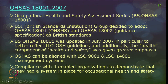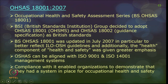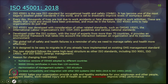Next is OHSAS 18001, with 2007 being the latest series. OHSAS stands for Occupational Health and Safety Assessment Series, also referred to as BS OHSAS 18001. The British Standards Institution (BSI) decided to adopt OHSAS 18001 and 18002 as a British standard for implementing occupational safety and health. This can be aligned with ISO 9001 on quality management systems and ISO 14001 on environmental systems. Compliance with OHSAS 18001 enabled organizations to demonstrate they had a system in place for occupational safety and health.